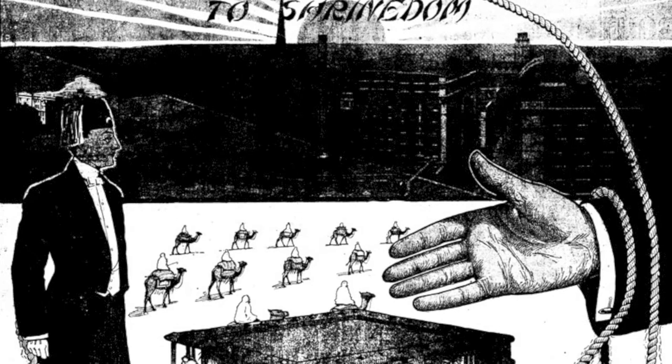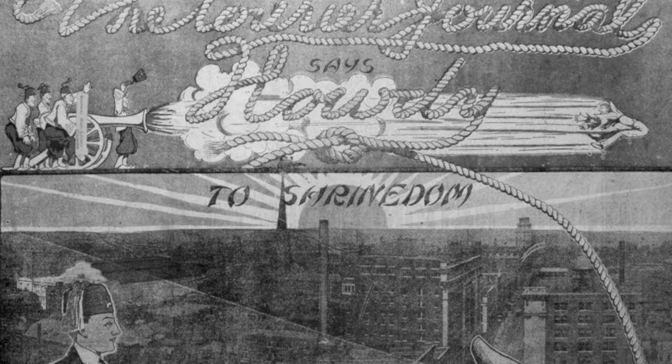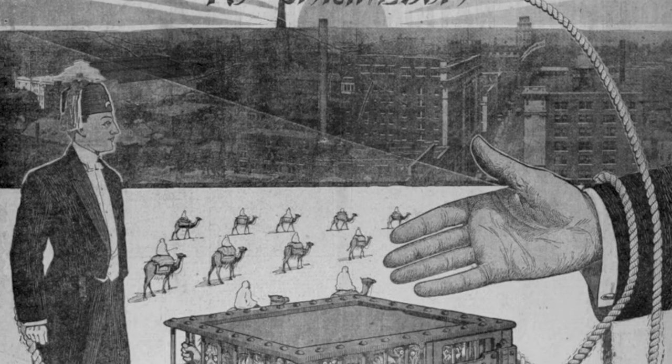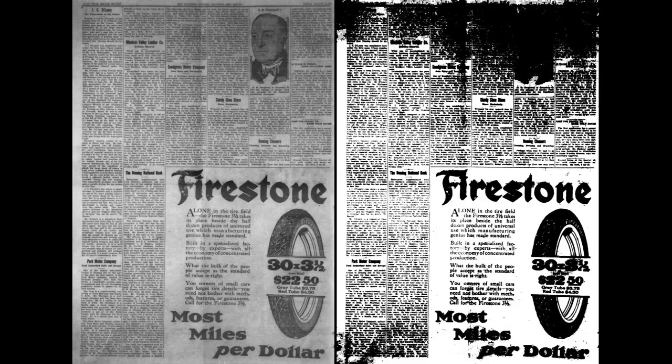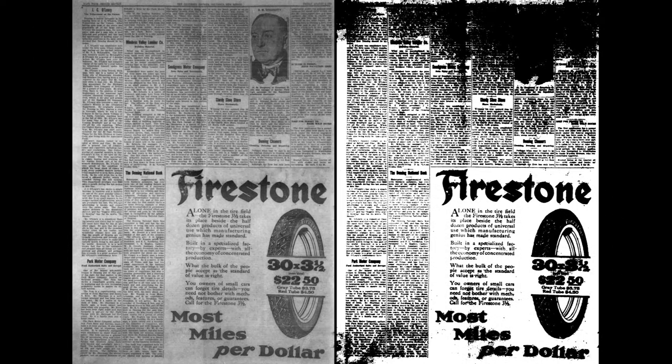Bitonals provide high contrast, clean images for OCR, but there is a downside. Because the pixels are basically considered black or white, there is a great potential for loss of detail. Notice the loss of detail in the bitonal image, particularly in the illustration. Also note how the bitonal affects the text — some letters appear blocked up while others are incomplete. Ultimately, this will reduce the accuracy of your OCR.